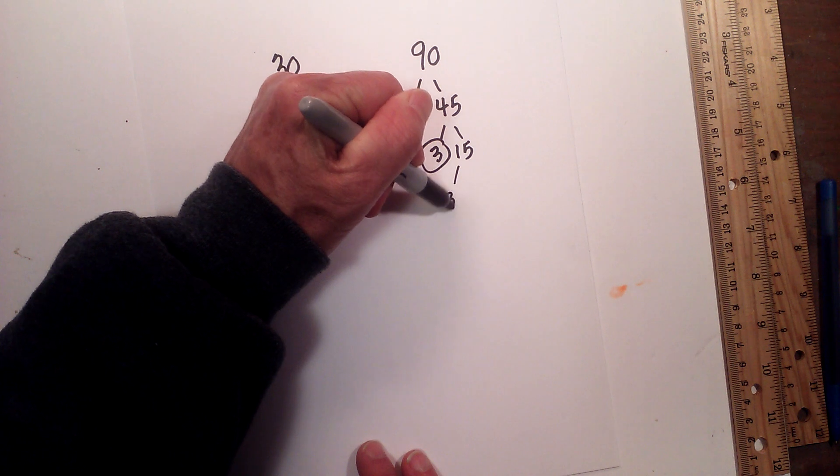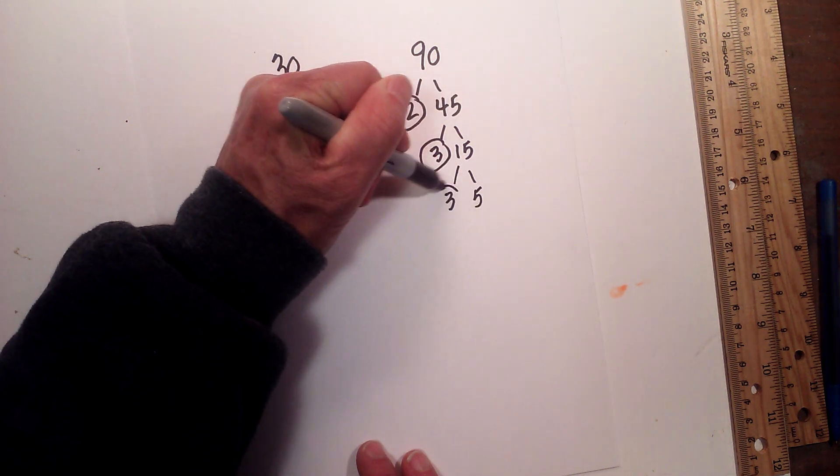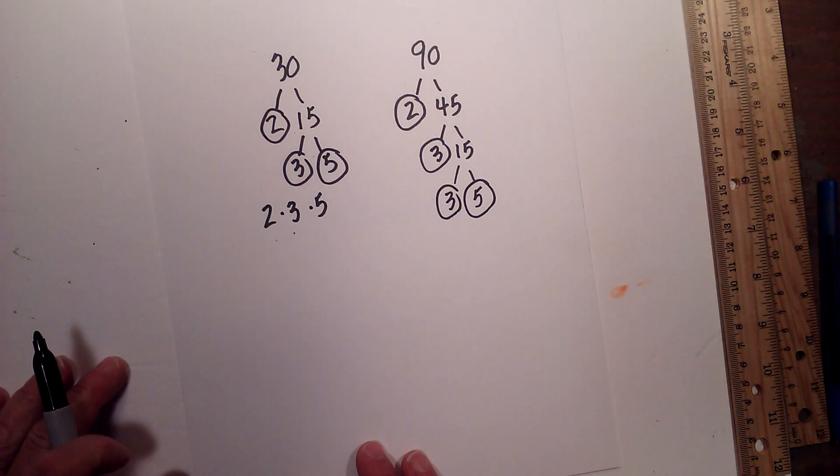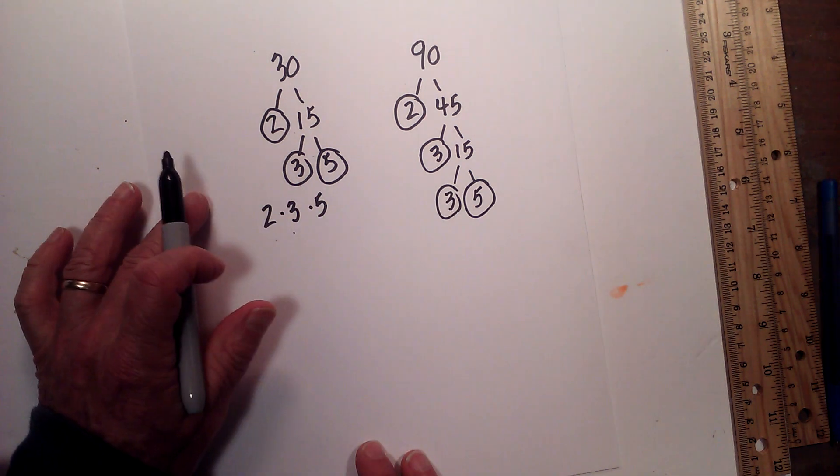And now let's go 3 times 5 equals 15. Circle both of these because they are prime. So I am now down to just prime numbers.